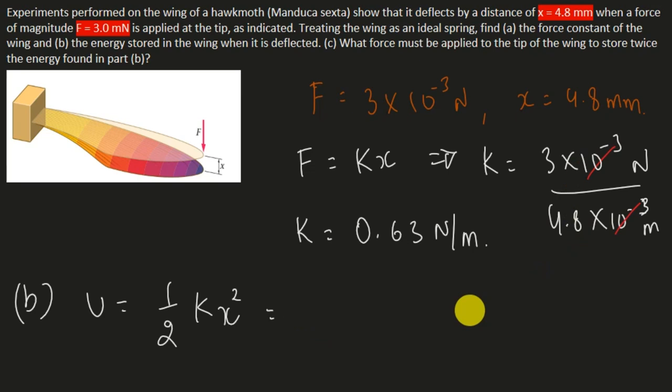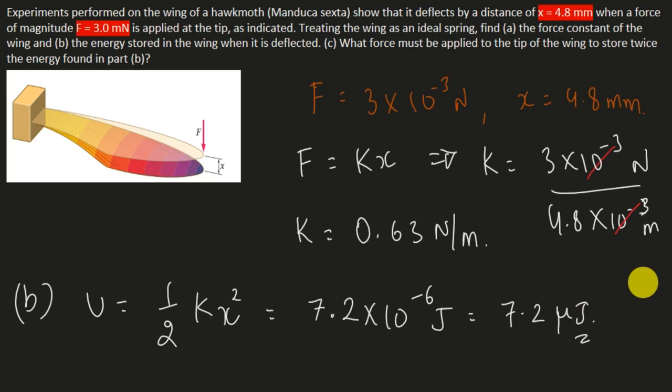For part B, we calculate the spring potential energy. Substituting the values, we get U equals 7.2 × 10⁻⁶ joules, or equivalently 7.2 microjoules. That is the answer for part B.